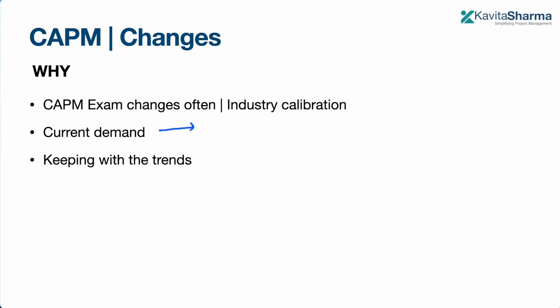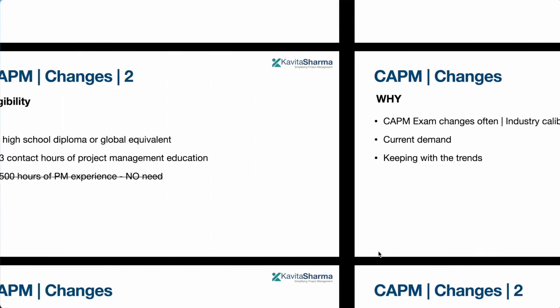The current ECO is keeping in line with what is expected from a new project manager. The current expectation is that new project managers should know predictive processes, agile processes, and also be able to do some work from a business analysis perspective. This is a very nice change which PMI has come up with.